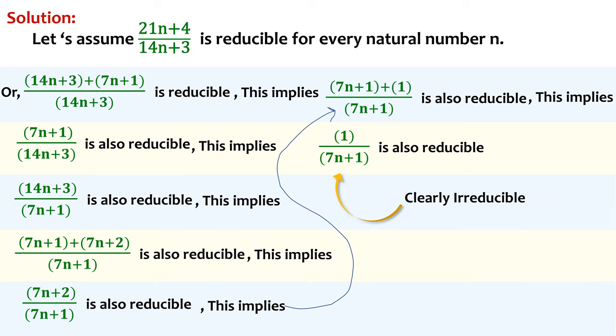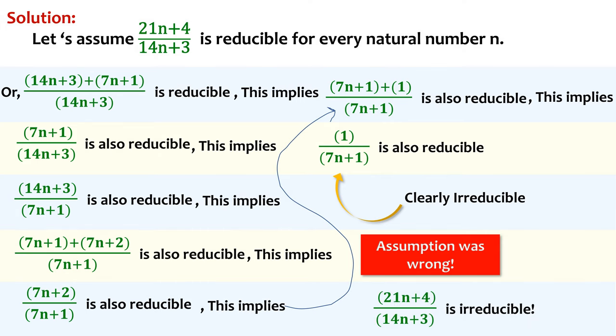We know, 1/(7n + 1) is not reducible for any natural number n. Since we arrived at a false result, our assumption at the beginning was wrong. (21n + 4)/(14n + 3) is clearly irreducible.